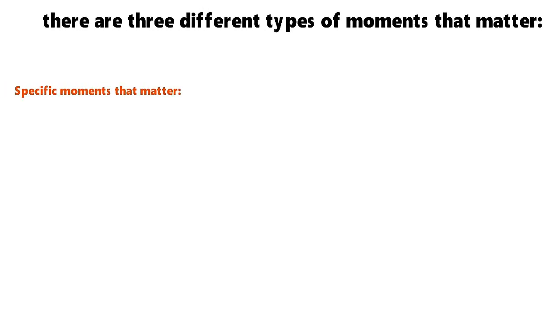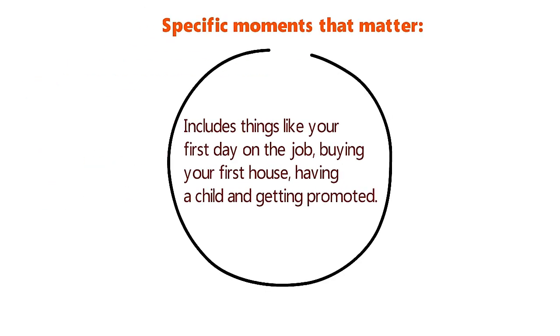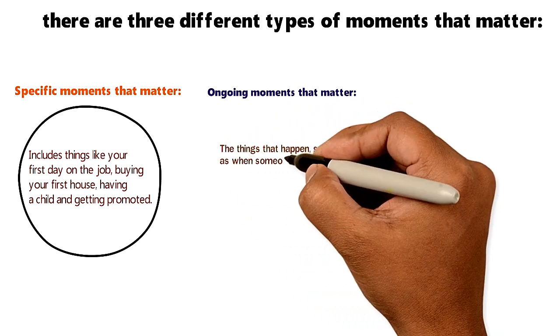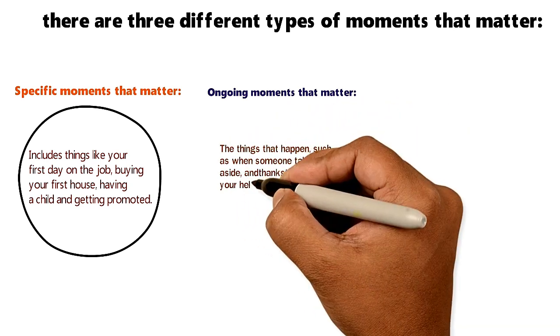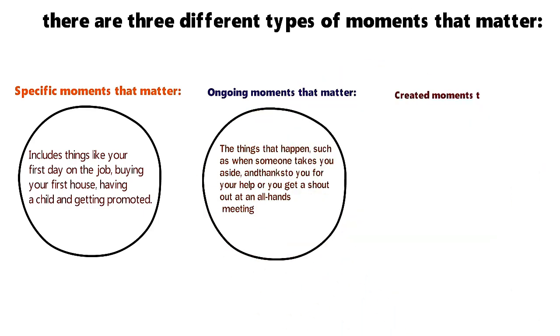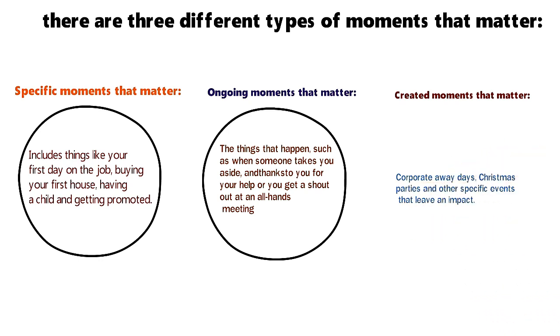Specific moments that matter include things like your first day on the job, buying your first house, having a child, and getting promoted. Ongoing moments that matter are the things that just happen, such as when someone takes you aside and thanks you for your help or you get a shout-out in an all-hands meeting. Created moments that matter include corporate away days, Christmas parties, and other specific events that leave an impact.